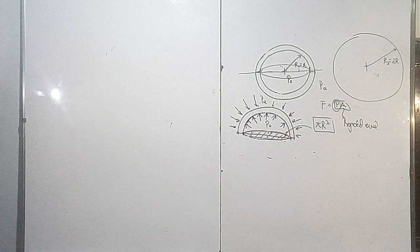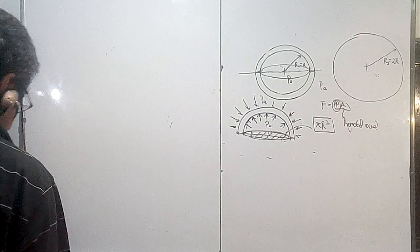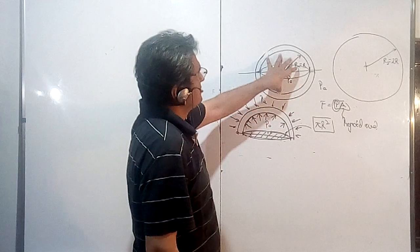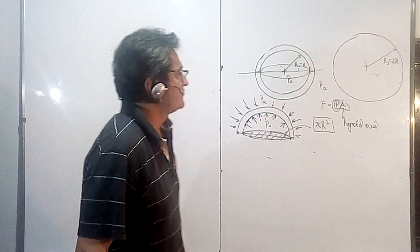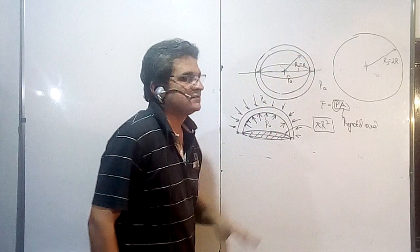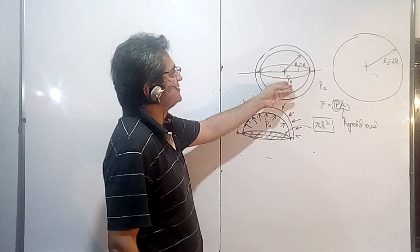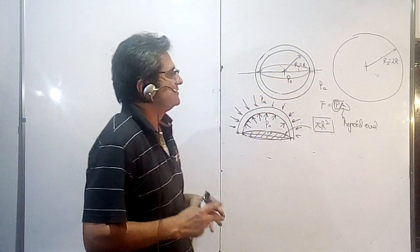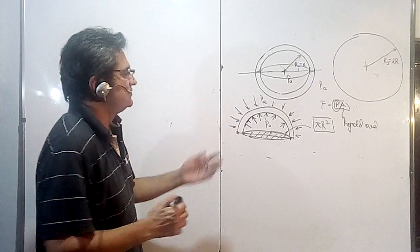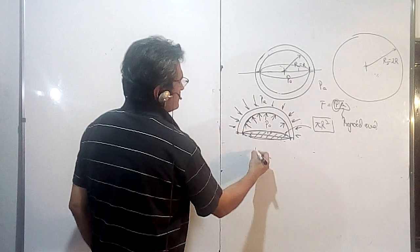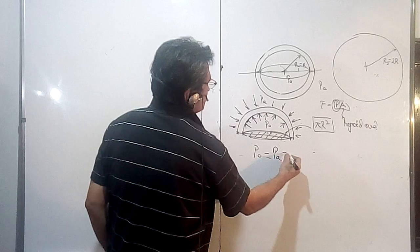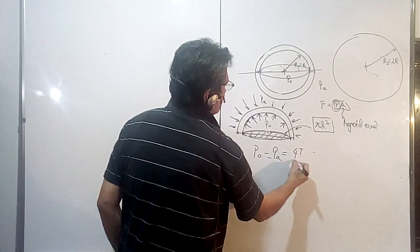In this lecture we will find the charge required to be given to a soap bubble to double its radius from r to 2r. This soap bubble has initial radius r, initial pressure inside p0, and outside pressure pa. The formula for excess pressure of a soap bubble is p0 minus pa equals 4T upon r.